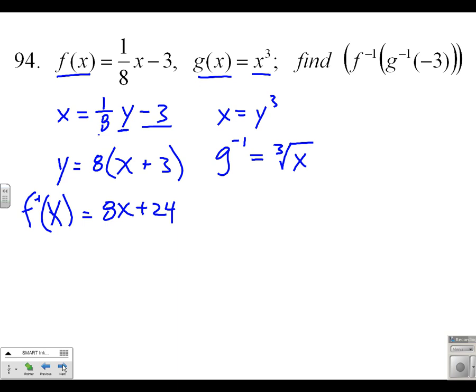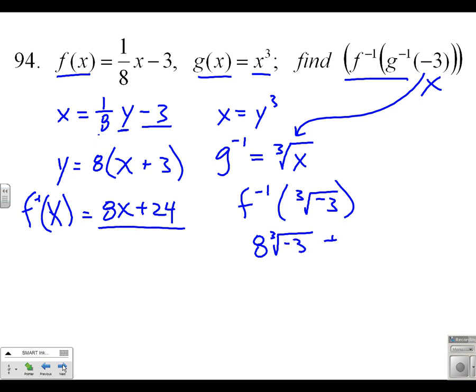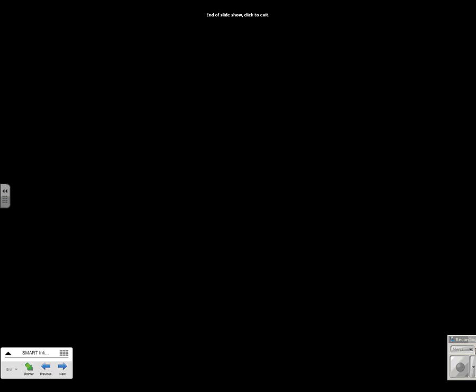Let's do that again. g inverse is third root of x. So now I have a choice. Now I can build my f inverse of g inverse factory with x, or I can just put negative 3 into g, and I get, I still need to find f inverse of third root of negative 3. And f inverse is a factory that does this. It takes 8 times the thing, in this case, third root of negative 3, plus 24. That negative can come out, negative 8, third root of 3 plus 24. Okay, hope that was helpful. And stay tuned, more to come.